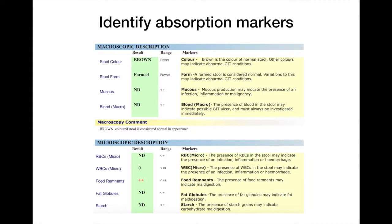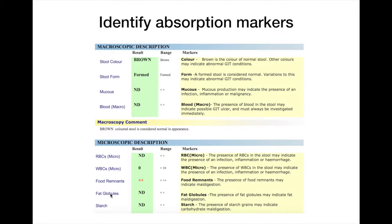So this is what the test looks like. You get a basic macroscopic and microscopic description. This measures things like mucus and blood, which would warrant further investigation if they are present. It also shows how well you're absorbing fats and carbohydrates, and whether there's any undigested food in the stool. It also measures pH, which is an important marker of gut health.